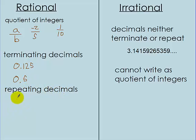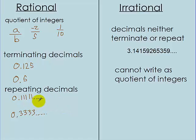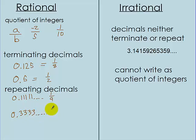Repeating decimals also belong to rationals — this means there's a pattern that keeps repeating forever. For example, 0.1111 repeating, or 0.3333 repeating. These are rational because you can write them as a quotient of integers. So 0.125 is 1 over 8, 0.5 is 1 half, repeating 1s is 1 ninth, and repeating 3s is 3 ninths, which simplifies to 1 third.